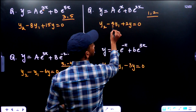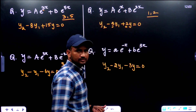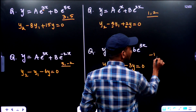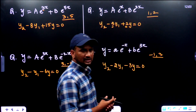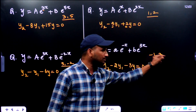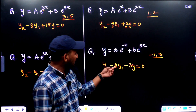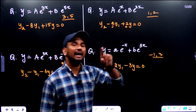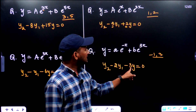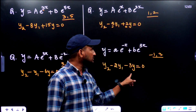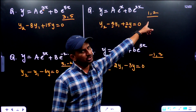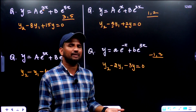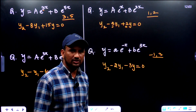And the roots for the next question are -1 and 3. Summation of roots: -1 + 3 = 2, that's why -2y1. Product of roots: -1 × 3 = -3, that's why -3y. If you have both roots with different signs, the product is minus, so -3y = 0.